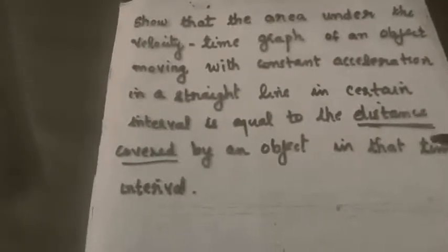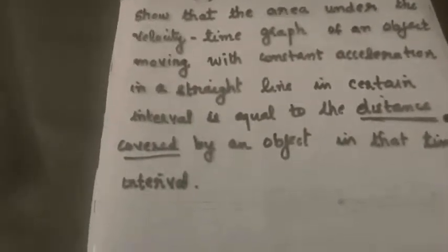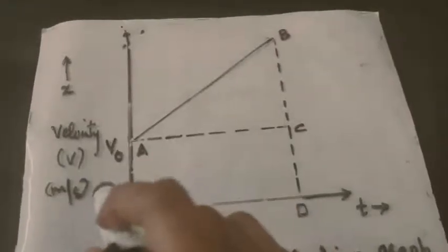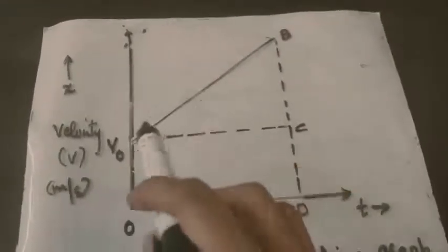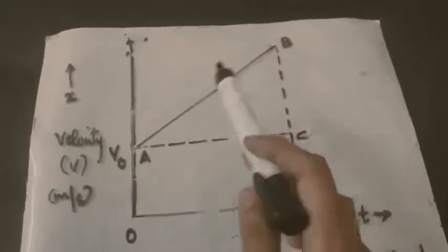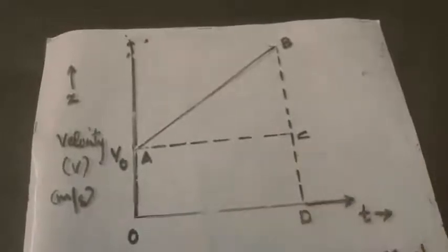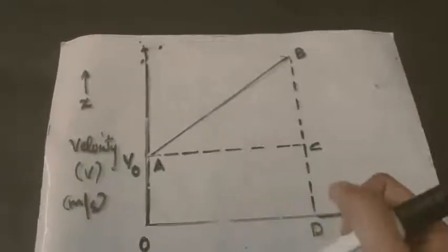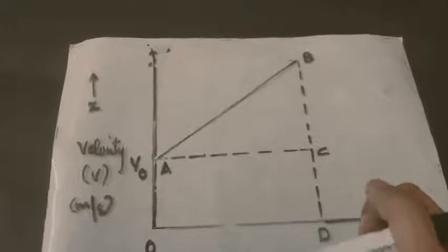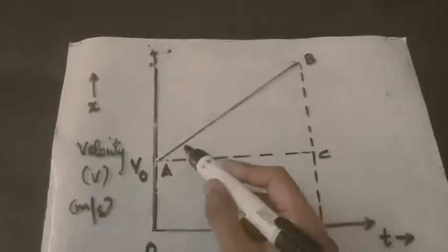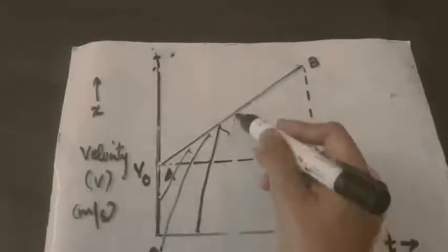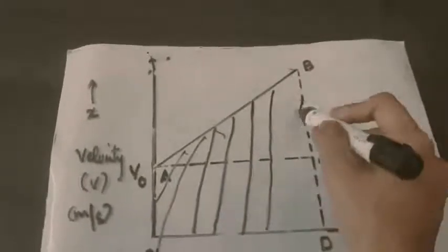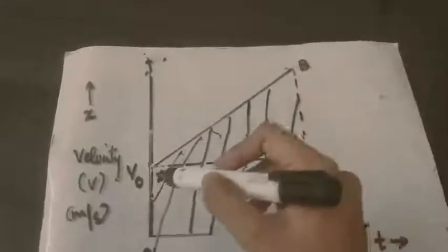First, let us draw the velocity-time graph for this case. We know the shape of the velocity-time graph of an object moving with constant acceleration is a straight line inclined to the time axis. We want to show that the area under this velocity-time graph — that is, the shaded region — is equal to the distance covered by the object.